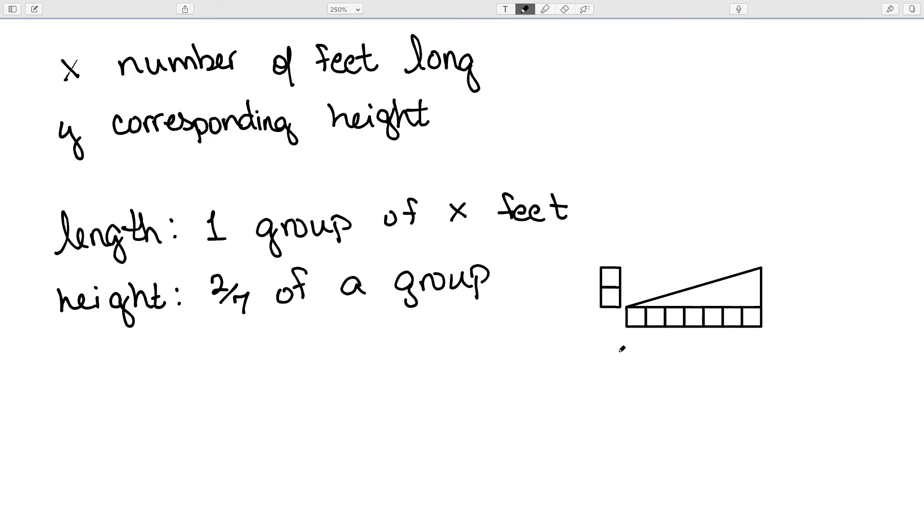That's because if I think about this as having a length of 7, and I want this to be one group, then each one of these will be 1/7th of a group, so we have a total of 2/7ths on our height.